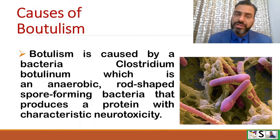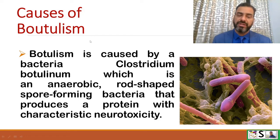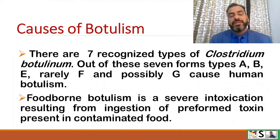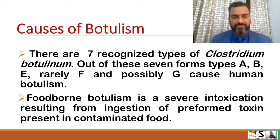Botulism is caused by a bacteria, Clostridium botulinum, which is an anaerobic rod-shaped spore-forming bacteria that produces a protein with characteristic neurotoxicity — this protein is the toxin. There are seven recognized types of Clostridium botulinum. Out of them, types A, B, E, and sometimes F and possibly G cause human botulism.